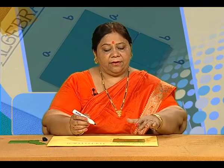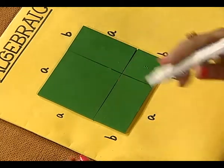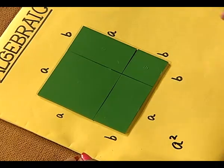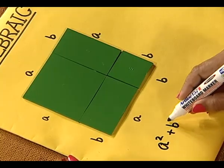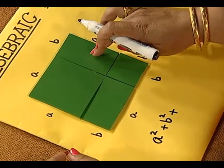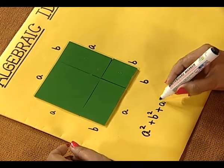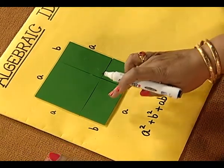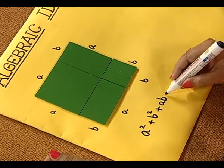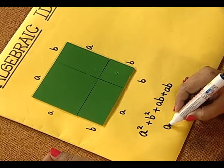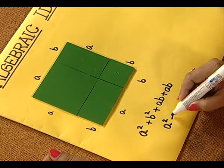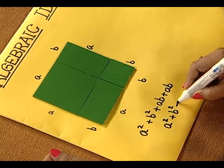Let us see how we can find out the individual areas and sum up. We have the area of this square as a square and the area of smaller square as b square and the area of this rectangle is obviously ab and the area of this rectangular cutout is again ab. Now, when we add them, we have a square plus b square plus 2ab.